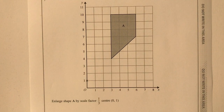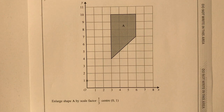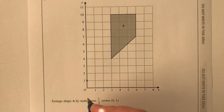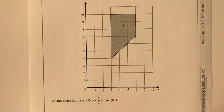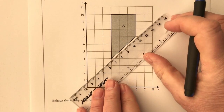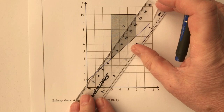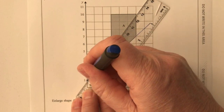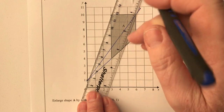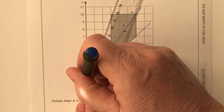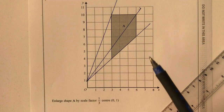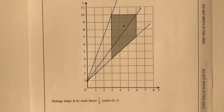Question seven asks us to enlarge shape A by a scale factor of a third. This is going to be slightly tricky to show on the video but they're asking us to use the centre zero one — this point here. What we mean by that is we can use lines of enlargement, which is like standing at this point and shining a torch, sending beams of light to each of the vertices of this shape.